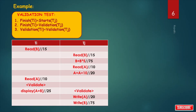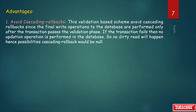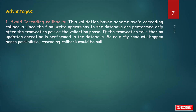This completes the concurrent transaction scenario with validation-based protocol in DBMS. Advantages: First, avoid cascading rollbacks. Validation-based schemes avoid cascading rollbacks because the final write operations to the database are performed only after the transaction passes the validation phase. So if the transaction fails before the write phase, no update operation is performed in the database, meaning no dirty read will happen and the possibility of cascading rollback will be null.